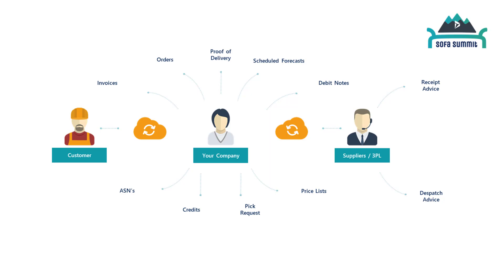A typical scenario: your customer sends a schedule or forecast, then sends through an order. You then perhaps send a purchase order to your supplier. Your supplier confirms they're shipping to your third-party warehouse. A message goes to your third-party warehouse so they know what to expect — they book it in and you get an electronic message that books it into your ERP system. You then pick and ship it, send a pick request to your third-party company, they ship it, and you get a confirmation. A message may go to your customer — an ASN, an Advanced Shipment Notice — saying these goods are on their way.